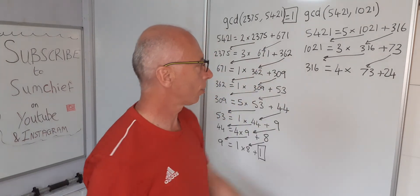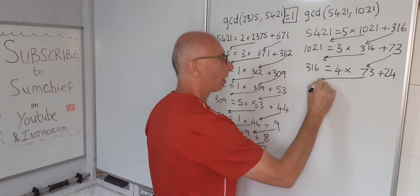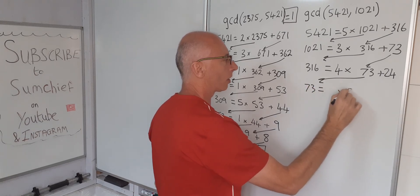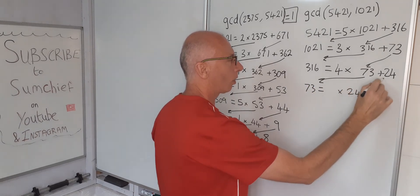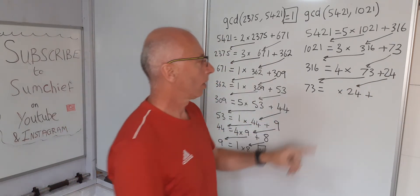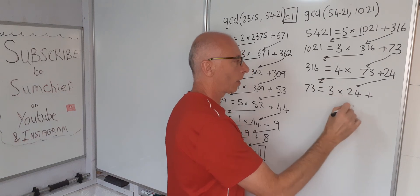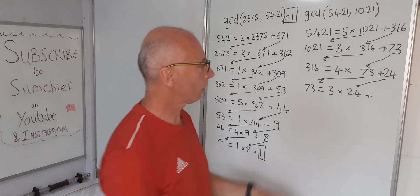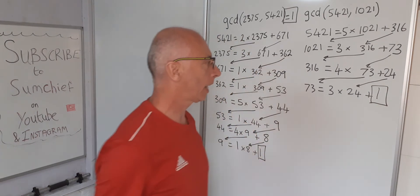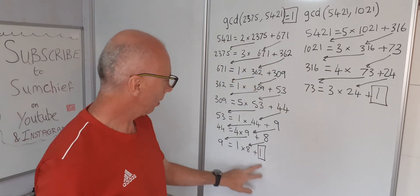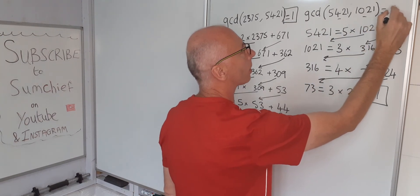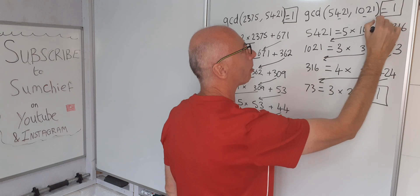73 equals something times 24 with a remainder. 73 equals 3 times 24. 74 equals 72 with one remainder. We've got a 1 at the end. So both of these are relatively co-prime, these two numbers here. So again the greatest common divisor, it's just going to be 1.